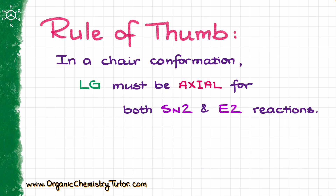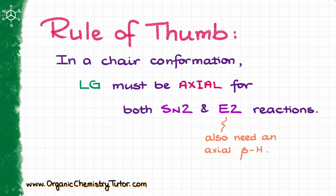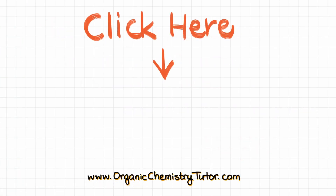What I want you to remember from this video: when dealing with chair conformations, the leaving group must be axial for both SN2 and E2 reactions. For E2, not only the leaving group but also the hydrogen on the adjacent beta carbon must be axial. If the leaving group is axial but no axial hydrogens are nearby, elimination is still not possible. In chairs, the axial position is the king of reactivity — not the equatorial position, even though equatorial is more thermodynamically stable. Thank you for watching. If you learned something new today, hit that thumbs up, subscribe for more organic chemistry content, and I'll see you next time!